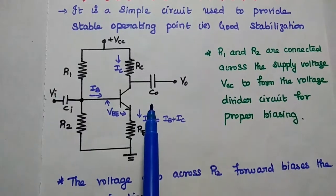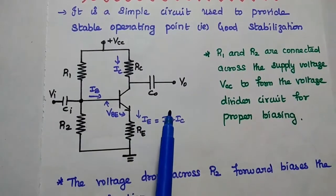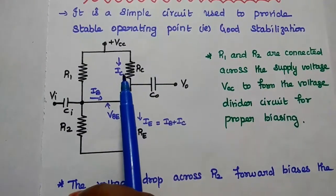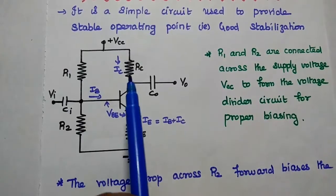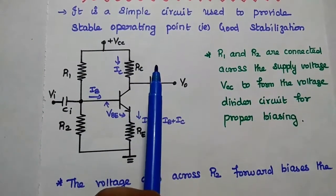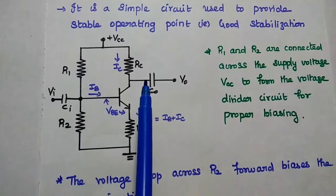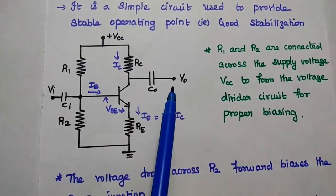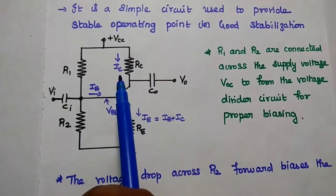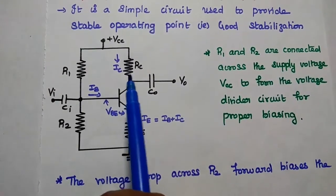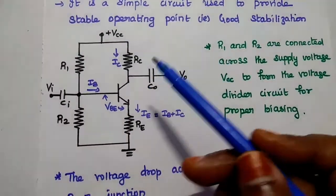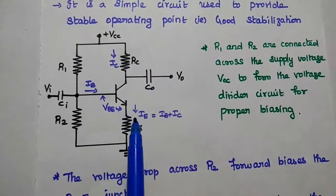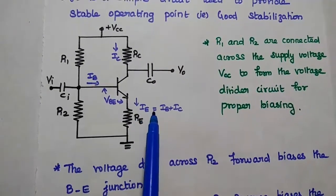The Q-point becomes unstable due to temperature variation. If the temperature increases, then the output current — that is, the collector current — is getting increased. If the temperature increases, the output current is also getting increased, which will affect the stability of the Q-point. We have to maintain this collector current as a constant one. But if the temperature increases, this collector current is also getting increased, and in turn, the emitter current is also getting increased.